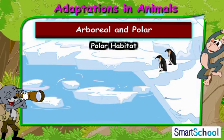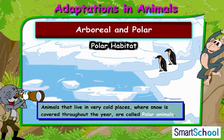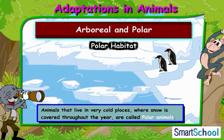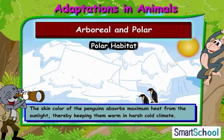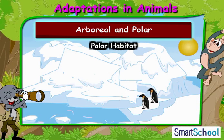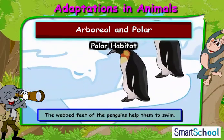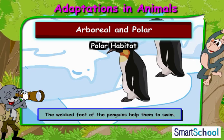Now let us understand about polar animals. Animals that live in very cold places where snow is covered throughout the year are called polar animals. Take the example of penguin and its adaptation to the polar environment. The skin colour of penguins absorbs maximum heat from sunlight, thereby keeping them warm in harsh cold climates. The webbed feet of penguins help them to swim.